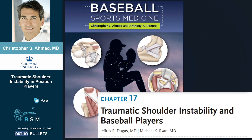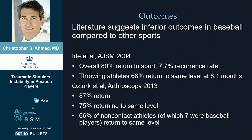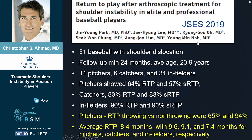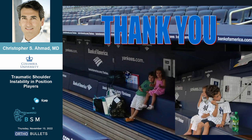Here's our baseball book — it's on Amazon, and it was made to support this meeting. Any title that comes up in a presentation at this meeting is in this book. Jeff Dugas wrote the chapter on instability. Literature suggests inferior outcomes in baseball compared to other sports — I'd rather operate on a football player who dislocates their shoulder than a baseball player on their throwing side. If you're a pitcher and it's your throwing side that gets injured, you have a high risk of an inferior outcome. For those who take care of high school athletes, kids who injure their dominant shoulder playing football in the fall can completely change their future in baseball.